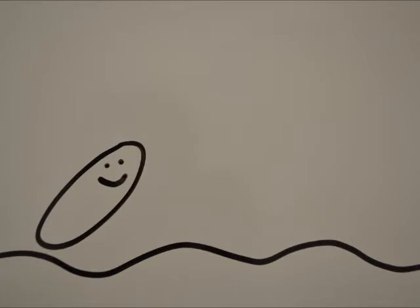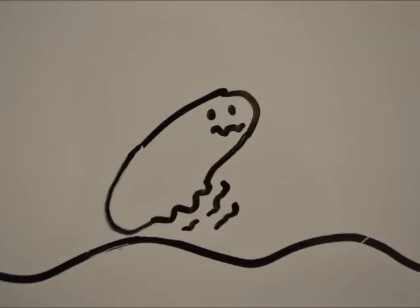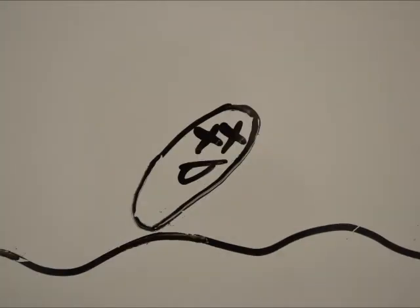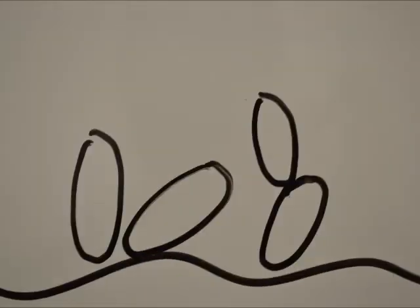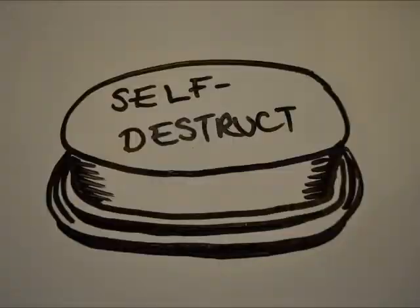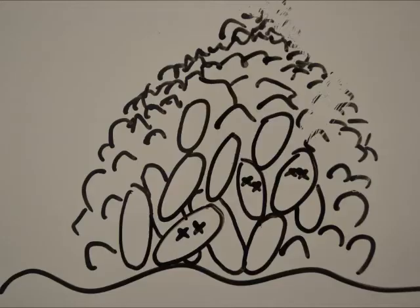This is achieved by creating bacteria dependent on nutrients with limited availability, so they are not equipped to survive without them in the wild. Another prevention is that when population density rises too high, a self-destruct mechanism is triggered.